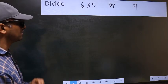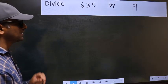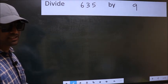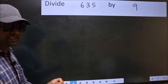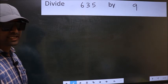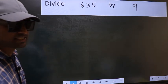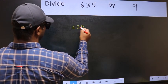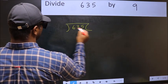Divide 635 by 9. While doing this division, many make a mistake. What is the mistake? I will let you know, but before that, we should frame it this way: 635 divided by 9.